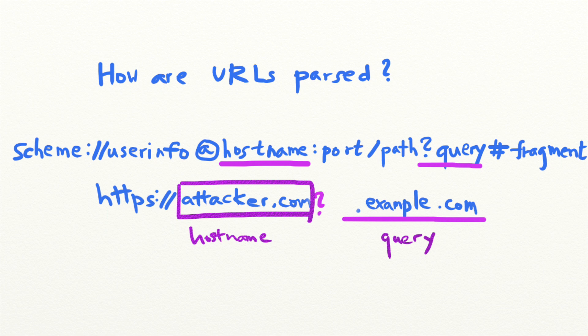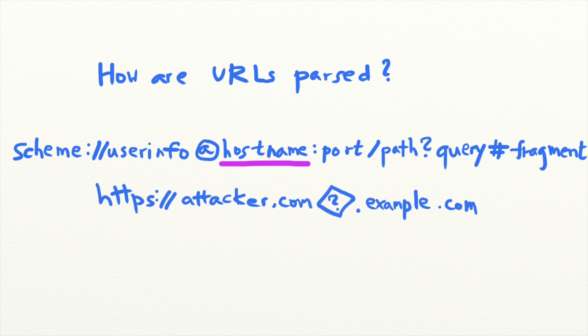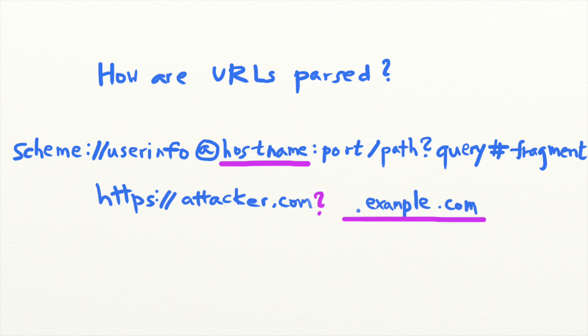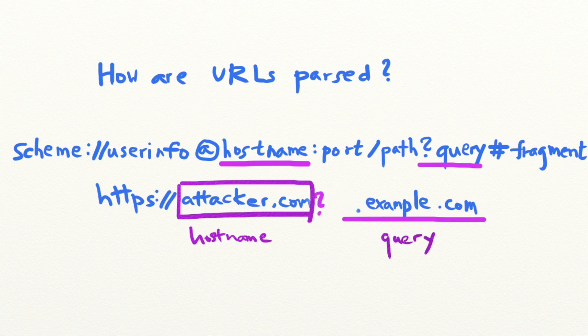Another common scenario is that browsers will attempt to find a most-alike character. For example, if this character appears in the URL, the validator might determine that the hostname is example.com, while the browser attempts to normalize the URL by converting the special character into a question mark, making attacker.com the hostname instead.